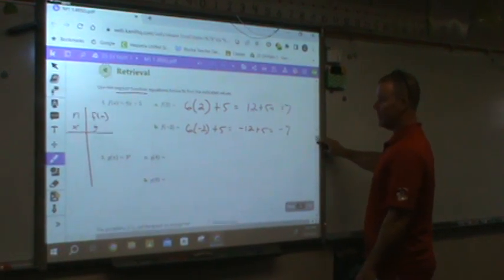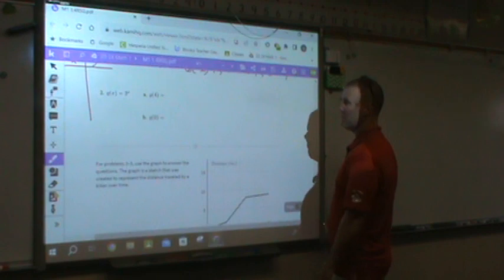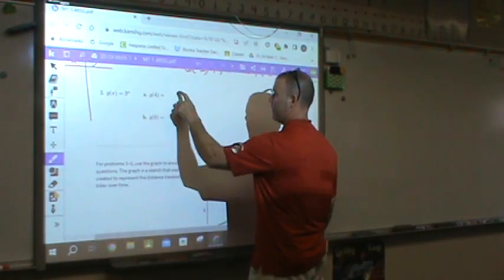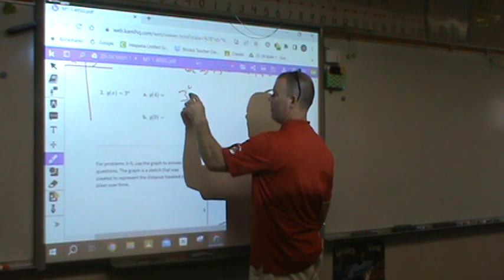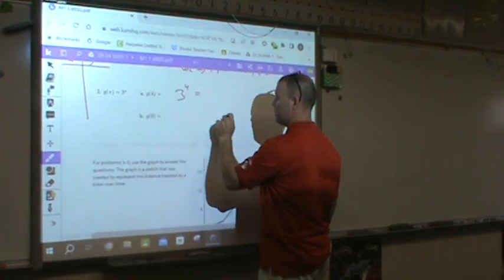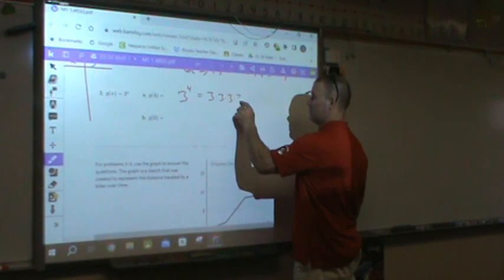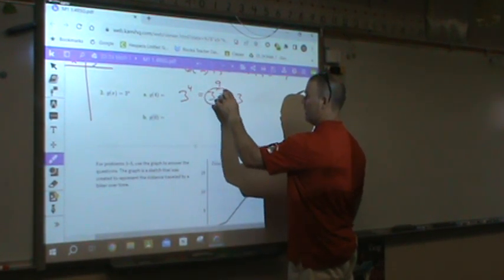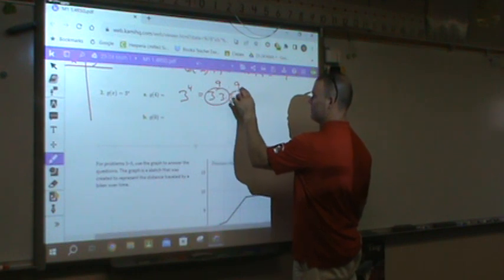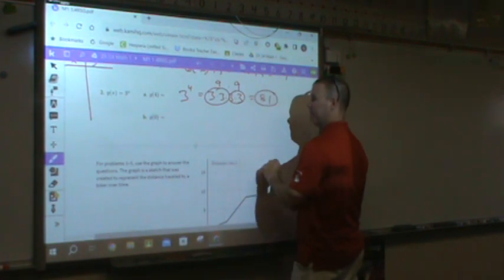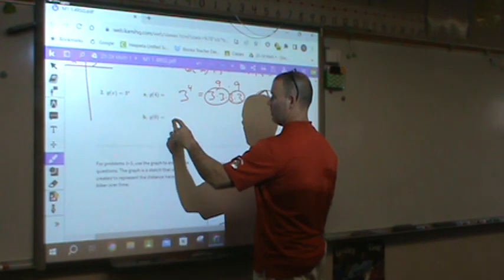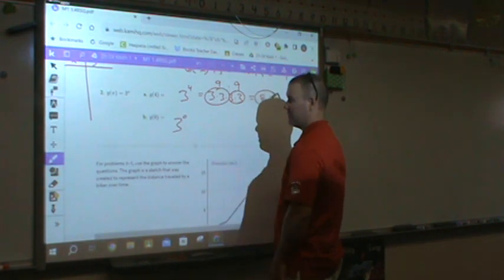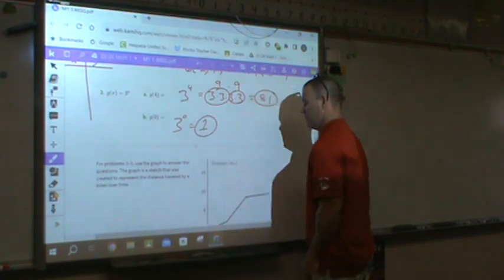Now, with the exponent, that's a little bit more difficult, but it's still the same concept. g of x. x is an input. So, 3 to the 4th power is equal to 3 times 3 times 3 times 3. That's 9, 9, 9 times 9 is 81. Done. g of 0. Well, the exponent is your x, g of 0. Anything to the 0 power is 1. Done.